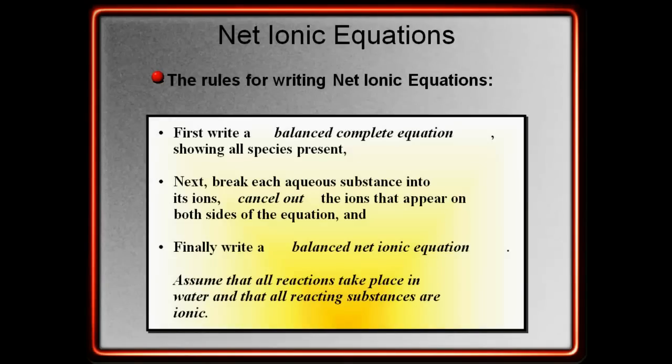So, the rules for writing the net ionic equations are, first, you want to write a balanced, complete equation showing everything present. Then, you want to break each aqueous substance down into ions. You're going to cancel out the ions or the spectator ions that appear on both sides. And then, finally, write a balanced net ionic equation. When you are doing net ionic equations, you want to assume that all reactants are taking place in water and that all reacting substances are ionic.